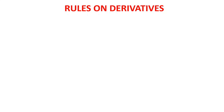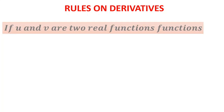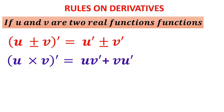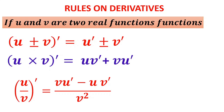Before we see what parametric differentiation is, let us look at the rules of derivatives. If u and v are two real functions, the sum rule is: (u ± v)' = u' ± v'. The product rule is: (u·v)' = u·v' + v·u' — keep the first, differentiate the second; keep the second, differentiate the first. The quotient rule is: (u/v)' = (v·u' − u·v') / v² — denominator squared times differentiation of numerator minus numerator times differentiation of denominator.